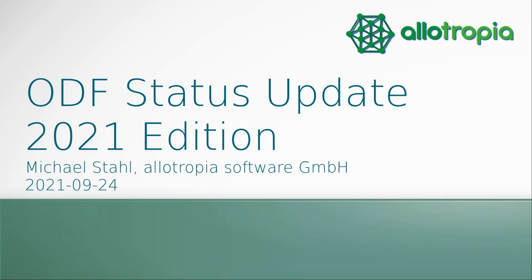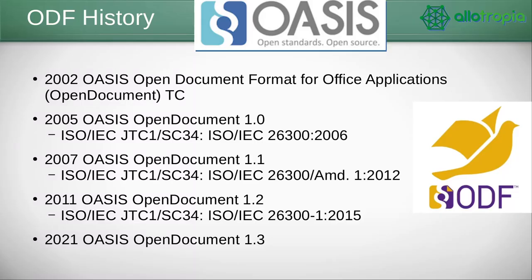First, a quick overview about the history of ODF. In the beginning, in the year 2002, Sun Microsystems wanted to have an open standard for office documents, so they went to the standards organization OASIS, where a technical committee was created to develop the Open Document Format for office applications. In 2005 the first version of the standard was finished and became an OASIS standard.